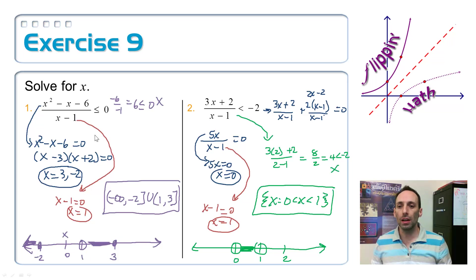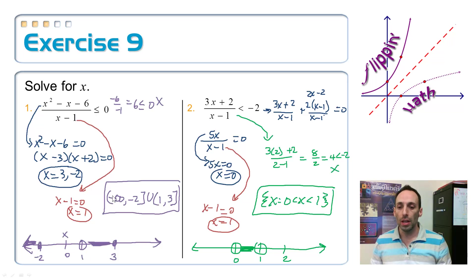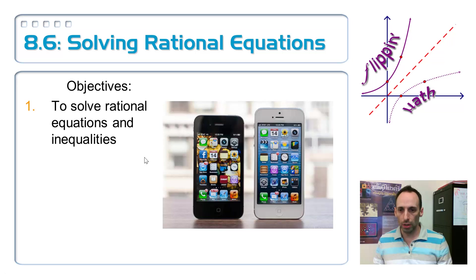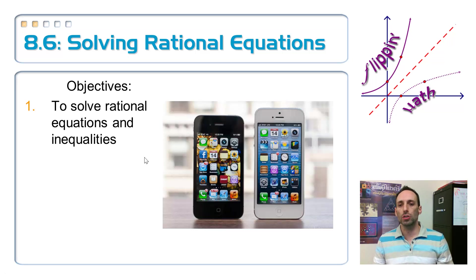You cannot take a shortcut for less-than on that one because there were three critical values. That concludes our lesson on solving rational equations and inequalities.